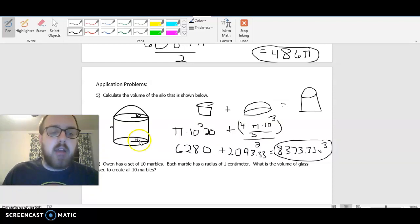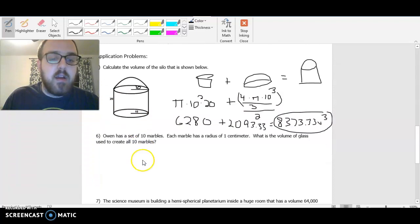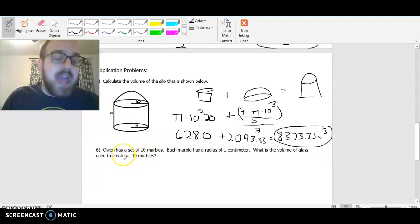Let's do one more application problem, and then you guys can move on to some practice on this. I'll move my video out of the way here. But we have Owen has a set of 10 marbles. Now, each marble has a radius of one centimeter. What does the volume of glass used to create all 10 marbles?